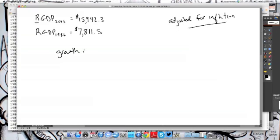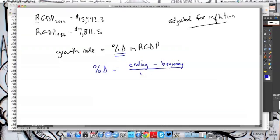So the growth rate is simply just the percentage change in real GDP. The percentage change is going to be the ending value that you're looking at minus the beginning value that you're using, and you're going to divide this by the beginning value. And then we're just going to times it by 100 just to get it into a rate.